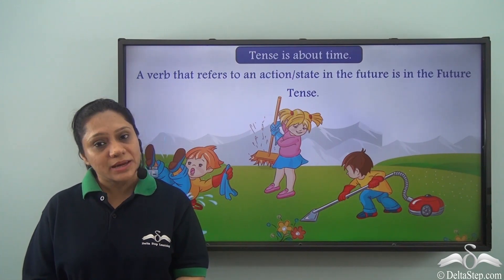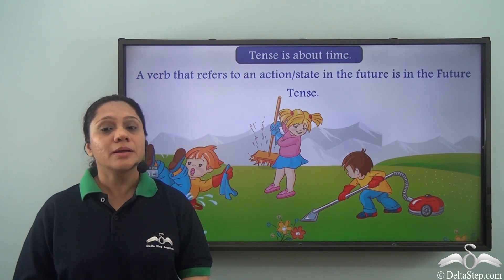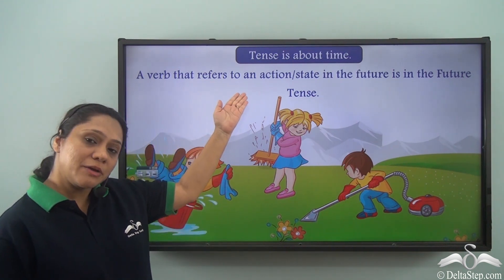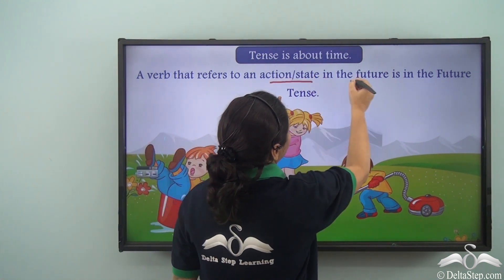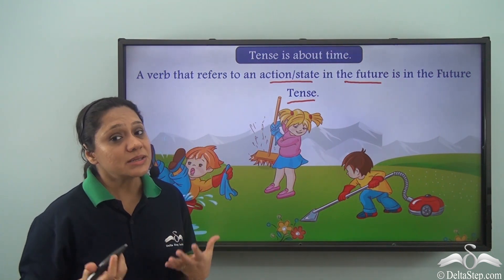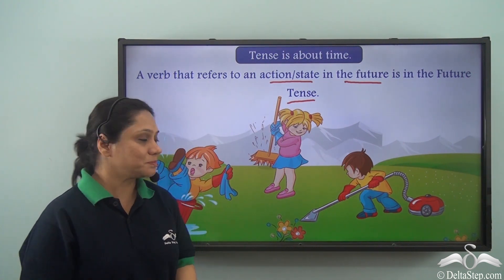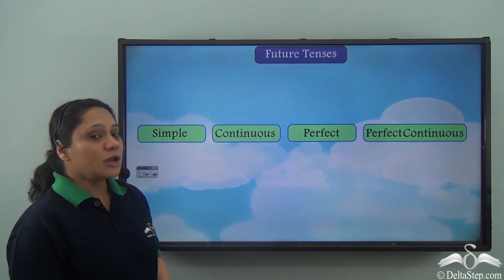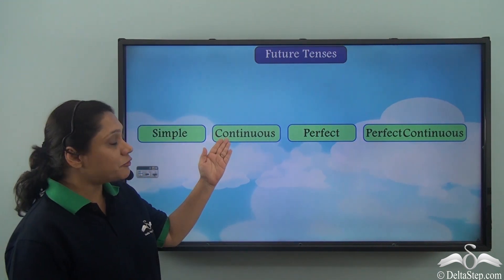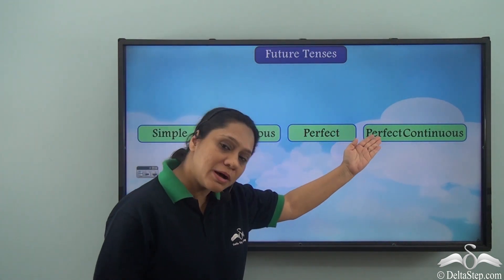We have studied tenses in detail and you know that tense is about time. There are three main types of tenses: the past tense, the present tense, and the future tense. A verb that refers to an action or state in the future is in the future tense. Let us revise the different types of future tense quickly today. Future tenses are of four kinds: the simple future tense, the future continuous tense, the future perfect tense, and the future perfect continuous tense.